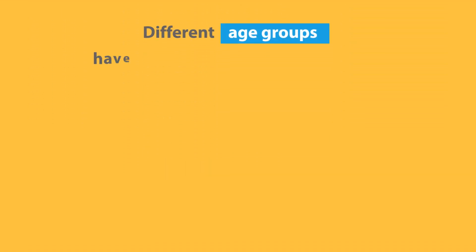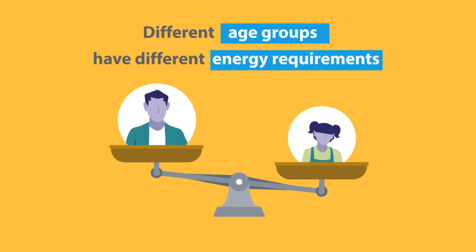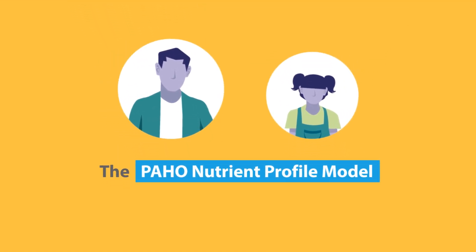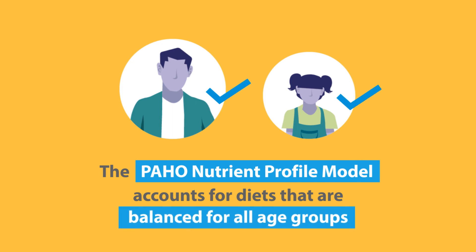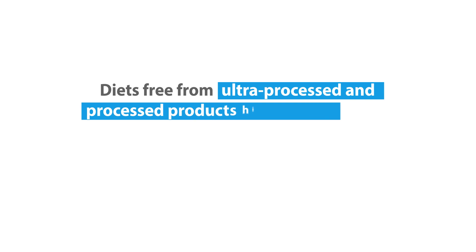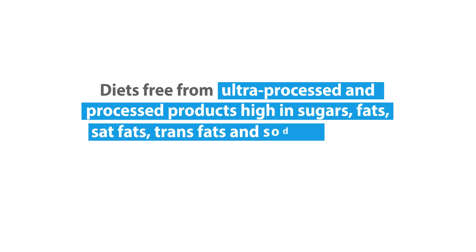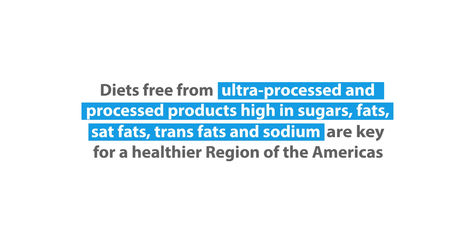Different age groups have different energy requirements. The PAHO Nutrient Profile Model accounts for diets that are balanced for all age groups. Diets free from ultra-processed and processed products high in sugars, fats, saturated fats, trans fats, and sodium are key for a healthier region of the Americas.